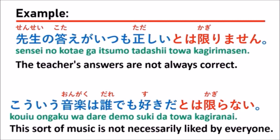こういう音楽は誰でも好きだとは限らない means this kind of music or this sort of music is not necessarily liked by everyone. Some songs you may like, but another person might not, right? So even if you like it, that doesn't mean everybody likes it. In Japanese for this case, you can say 限らない — it means it's out of the limitation. Maybe 90% of people like it but 10% don't.